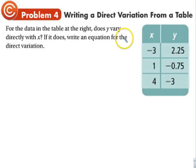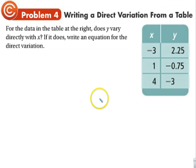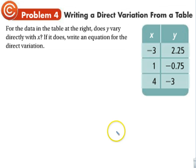Write a direct variation for the data in the table — does Y vary directly with X? If so, write the equation. Try to figure it out on your own. Also, I'll be adding another video about sequences which will be an assignment and possibly used as a project grade. Keep your eye out for that. Sorry it's 13 minutes, but it's two sections — about seven and a half minutes per section. All right, see ya.